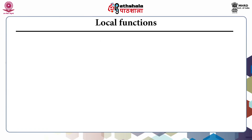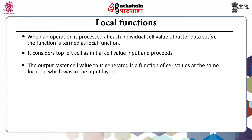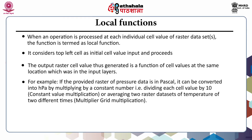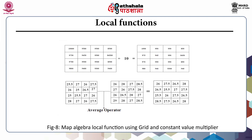When an operation is processed at each individual cell value of raster data sets, the function is termed a local function. It considers the top-left cell as the initial cell value input and then proceeds. The output raster cell value generated is a function of cell values at the same location in the input layer. For example, if the provided raster of pressure data is in pascals, it can be converted into hectopascals by dividing each cell value by 10 — that is a constant value multiplication — or by averaging two raster data sets of temperature of two different types. This figure shows the map algebra local function using a grid and constant value multiplier.